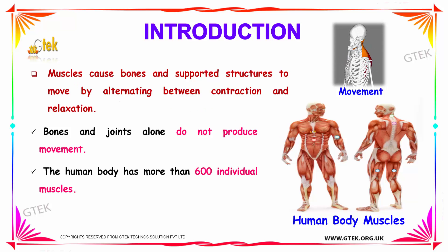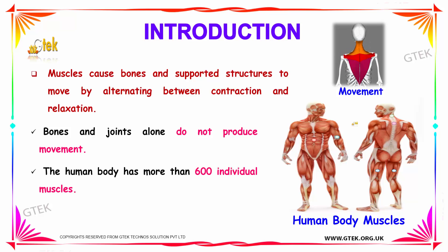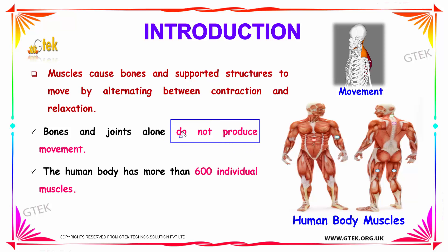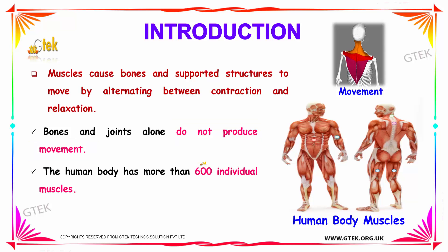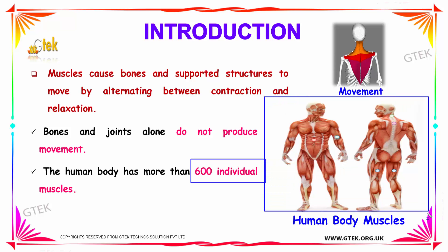Muscles cause the bones and support structures to move by alternating between contraction and relaxation. The bones and joints alone do not produce movement — you need muscles. The human body has around 600 individual muscles, as you can see in the overall muscular system overview here.